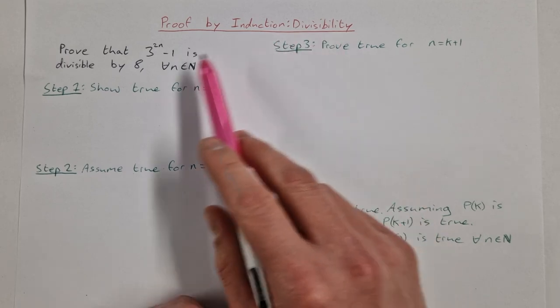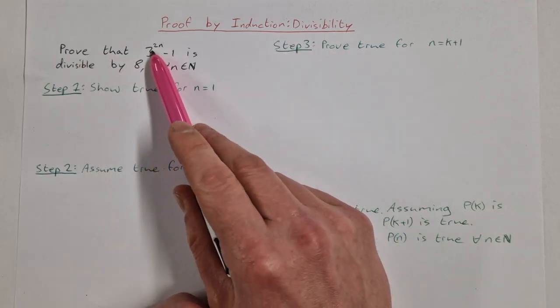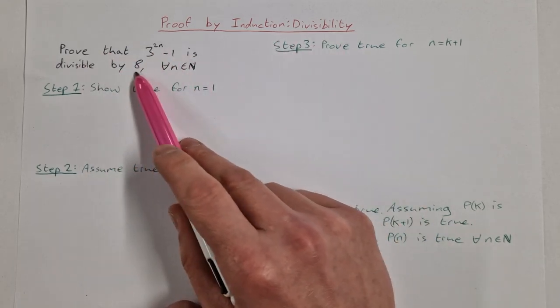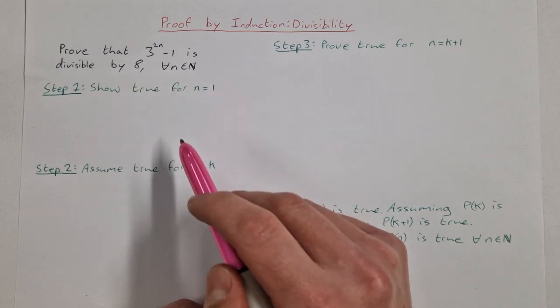Let's jump into this divisibility proof. Prove that 3 to the power of 2n minus 1 is divisible by 8 for all n element of the natural numbers.